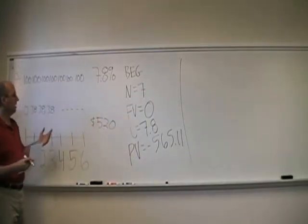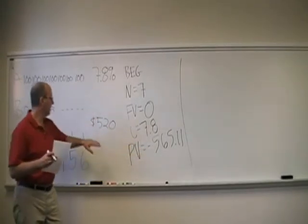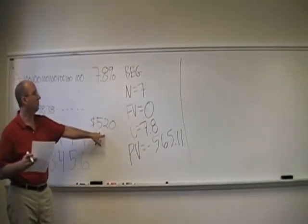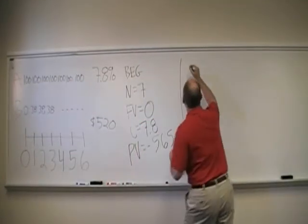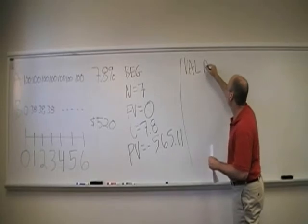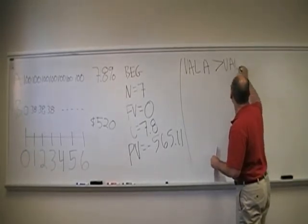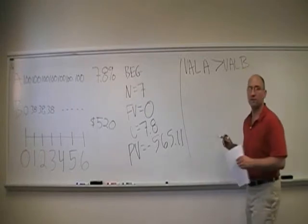Well, we can see A has a value of 565.11. B has a value of 520. So we know that the value of A is greater than the value of B.